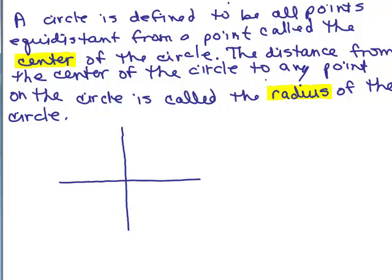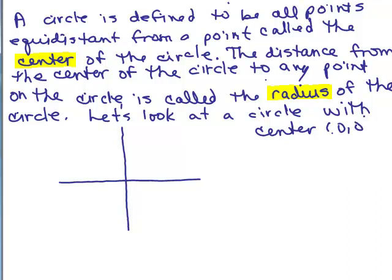So there's some center, and we'll look at a circle centered at the origin. Let's look at a circle with center (0, 0) — that would be the origin, correct? So it's right here in the center and it has some radius. If we go out that far we'll get to a point on the circle. So if you have a compass, those are used to draw a circle. Let's say I go out that far and I'll call that my radius — we also use the letter R for radius.